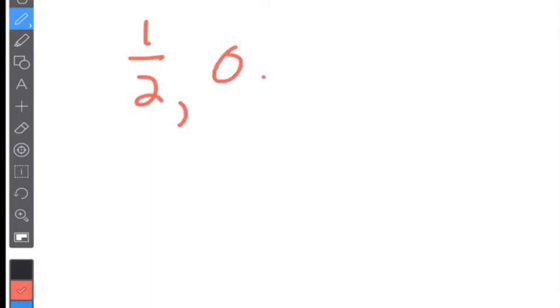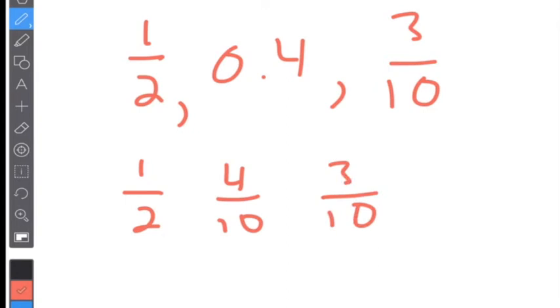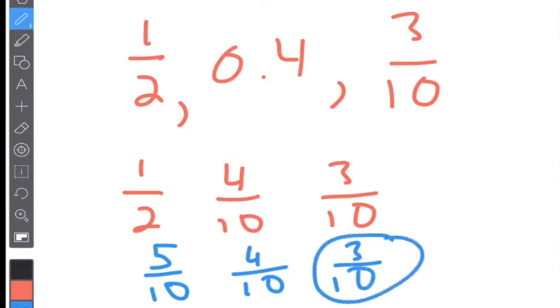Next, you're going to need to know how to compare fractions with decimals. So if I have one half, 0.4 (or four tenths), and three tenths — what I would do is make each one a fraction or each one a decimal. If I make each one a fraction: one half, four tenths is four over ten, and three tenths. Now you can either cross multiply or find the least common denominator. The easiest way here is the LCD, which is ten. So one half will be five tenths, we have four tenths, and three tenths. Three tenths is the smallest, then four tenths, then five tenths.